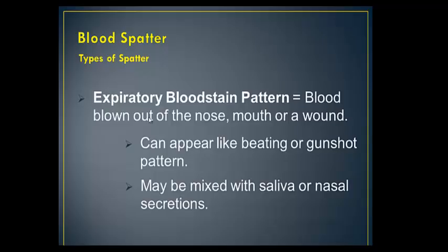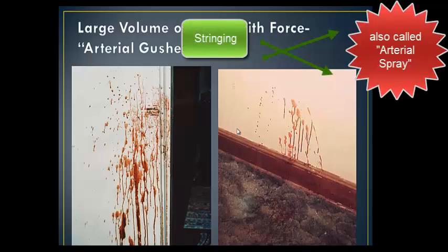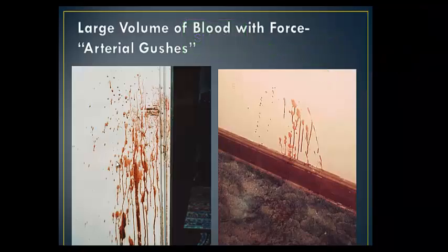Now, what can be a little deceiving: if someone coughs out blood through the nose, mouth, etc., that would have that misting pattern to it, and so that would be similar to a gunshot because of the misting. But they would test that — if it mixed with saliva or nasal secretions, it would be associated with an expiratory blood stain pattern. Anything expired through the mouth falls under that. There's also arterial gush — another type of pattern. If a knife incident made a slit across the throat and hit an arterial vein, it would give a spray pattern, and you can tell the direction. The larger drops would pool and run down.